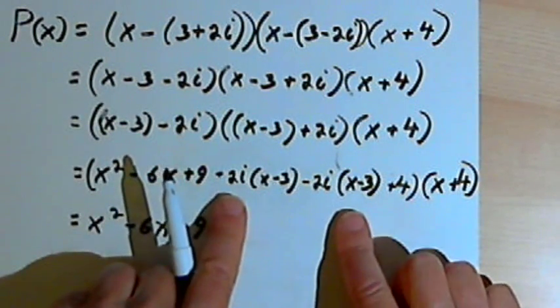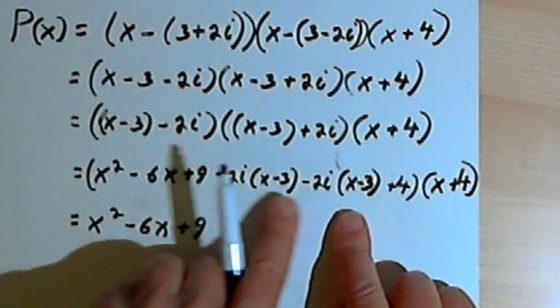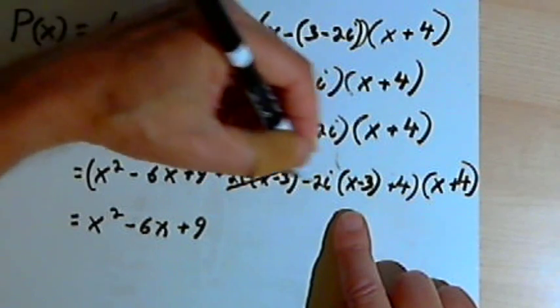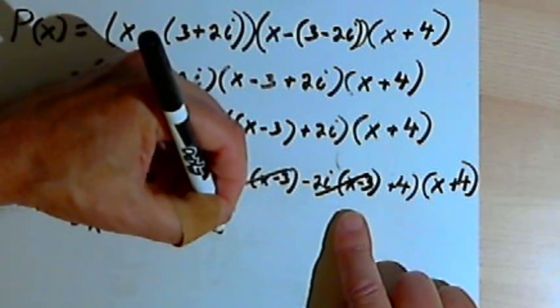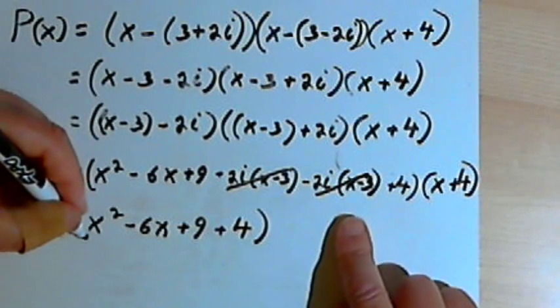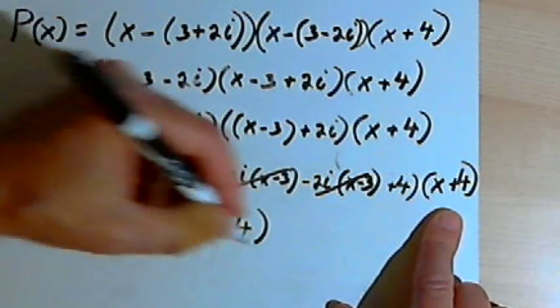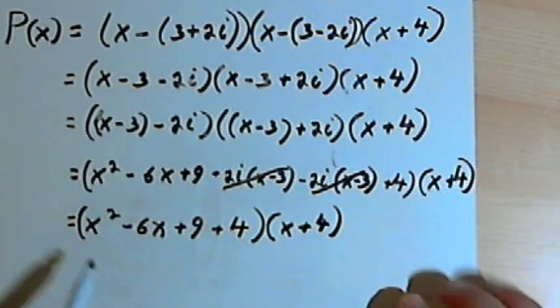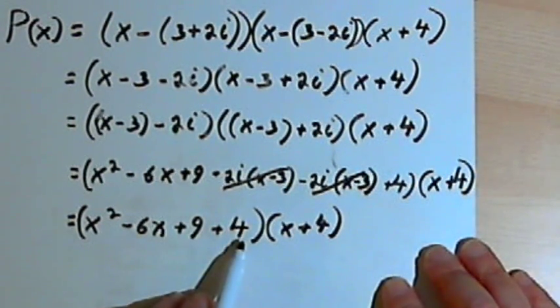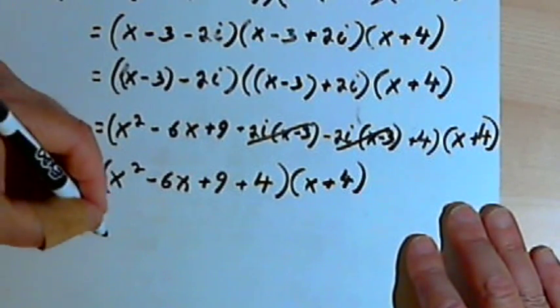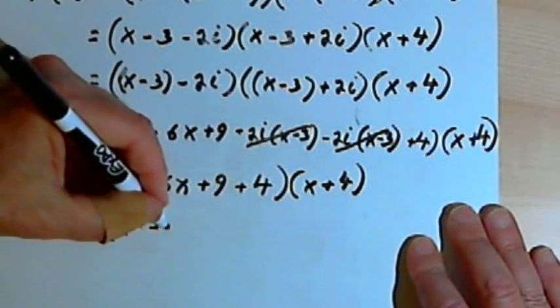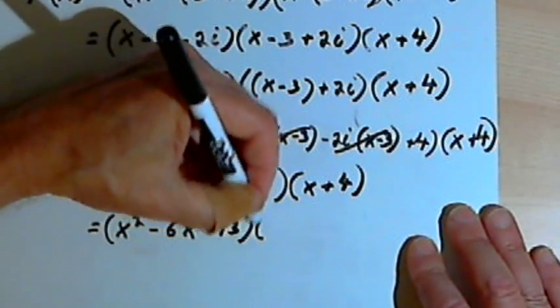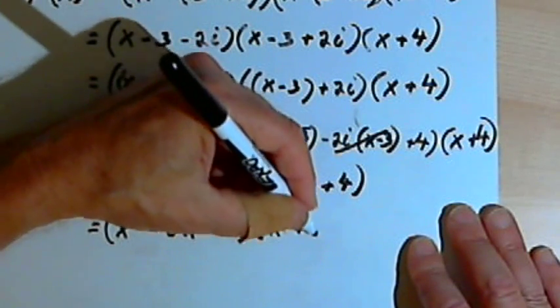I've got this x squared minus 6x plus 9. And you notice I've got a plus 2i times x minus 3 and a minus 2i times x minus 3, so they're going to cancel out. Then I've got a plus 4, and that whole thing is still going to get multiplied by x plus 4.